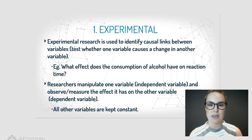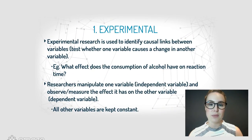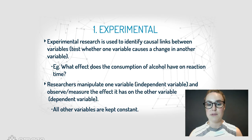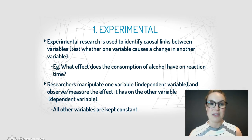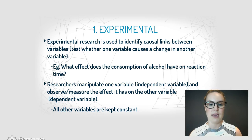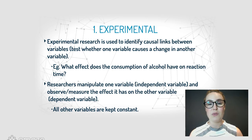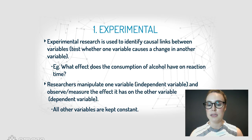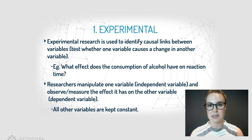Experimental research is used to identify causal links between variables. An example is the effect that alcohol consumption might have on reaction time — those are our two variables, and we're testing whether there's a causal effect between them. Researchers manipulate one variable, known as the independent variable, and then observe or measure the effect on the dependent variable. All other variables are kept constant.